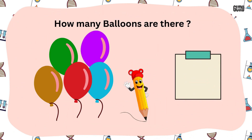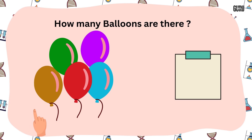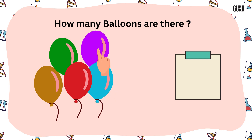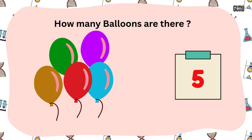How many greens are there? One, two, three, four, five. Five.